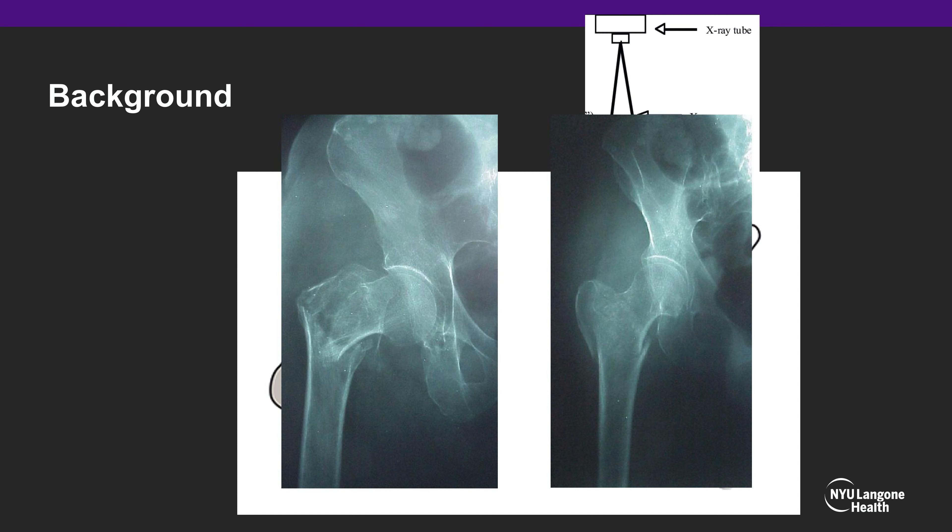Mean native femoral anteversion is 10 plus or minus 7 degrees, and thus the average internal rotation should be aimed for 10 to 15 degrees.